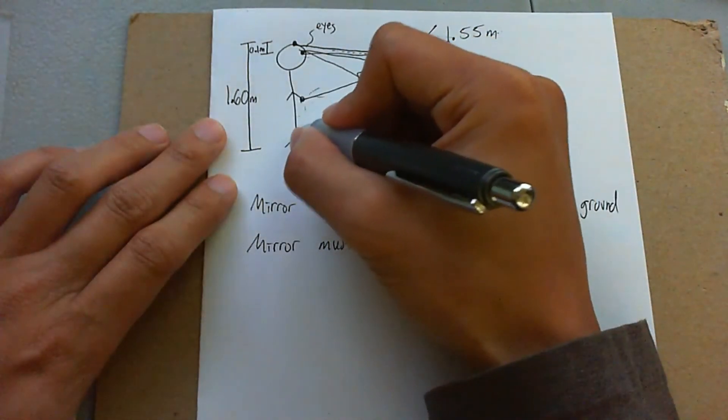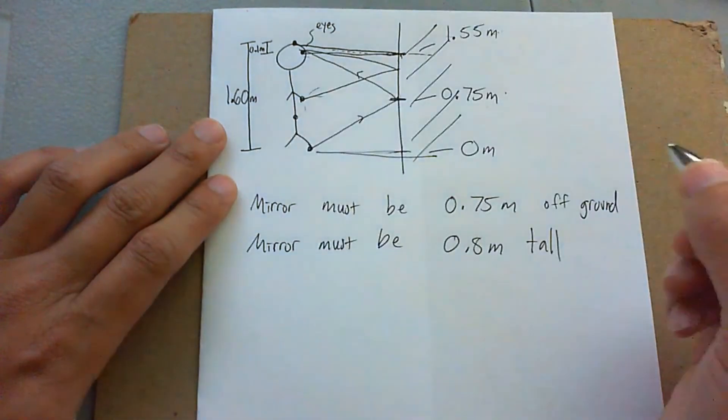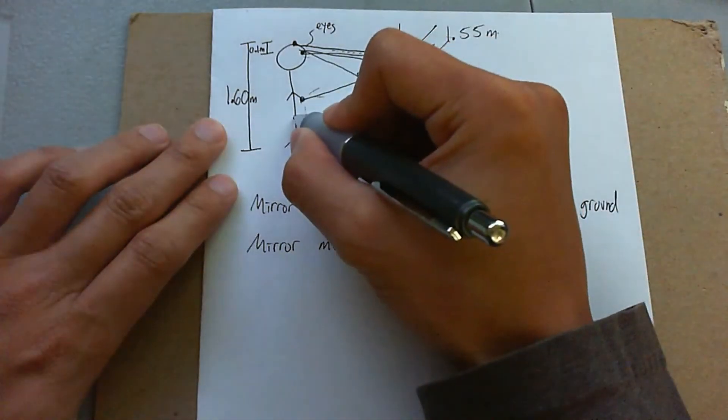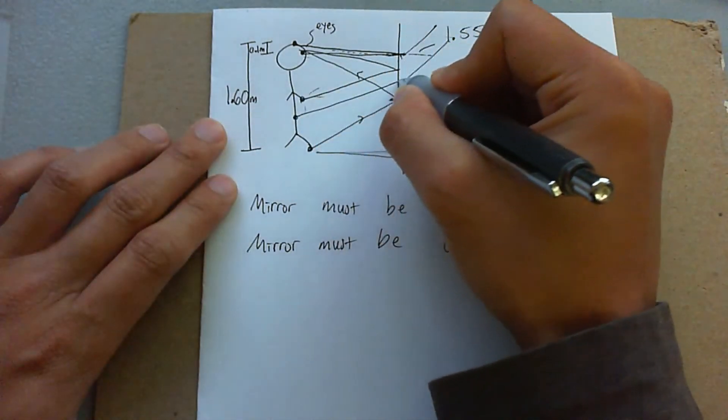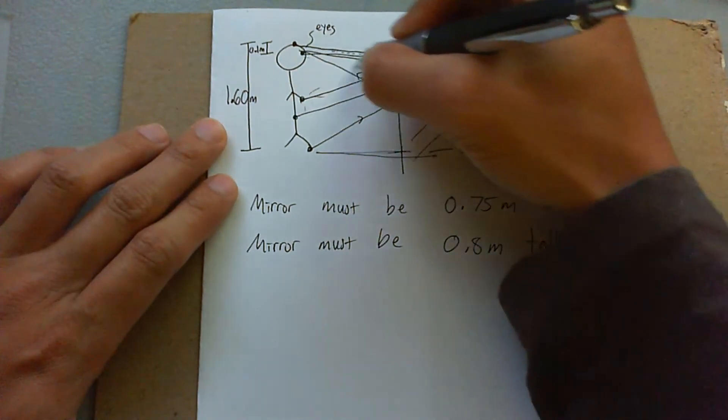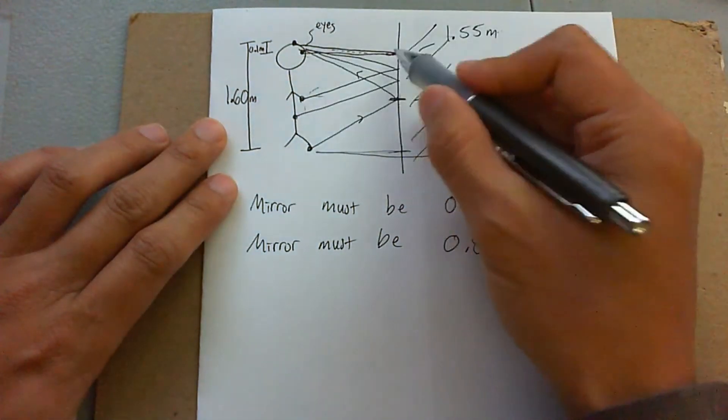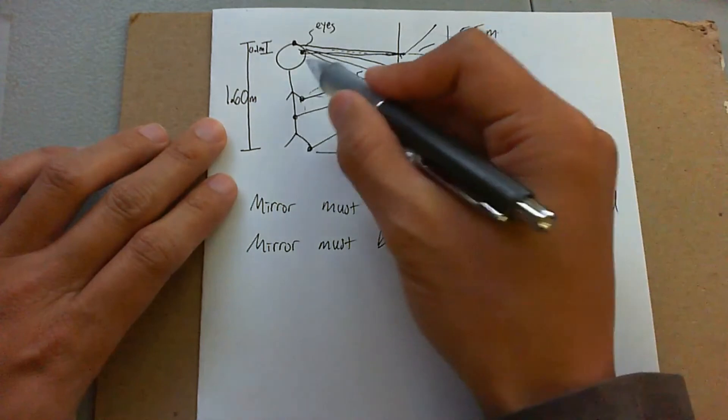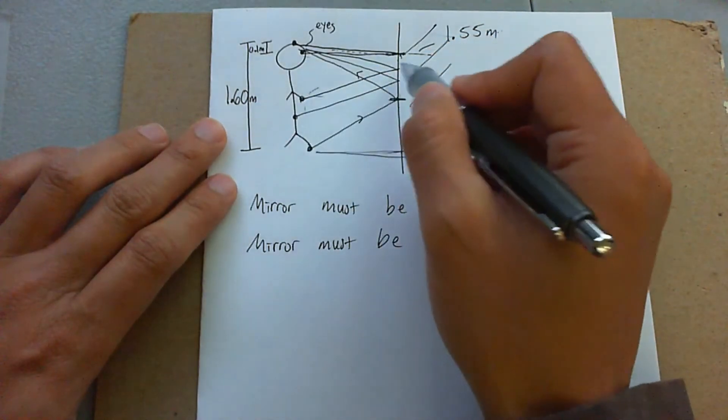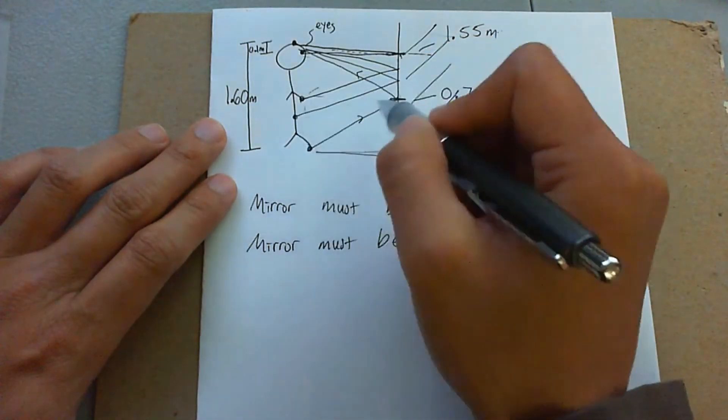What about her belly? She wants to see that. Same thing, halfway from that point to her eyes and then the rest of the way to her eyes. So that falls within that same range. Her whole body is viewable in this part of the mirror using that law of reflection.